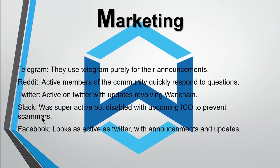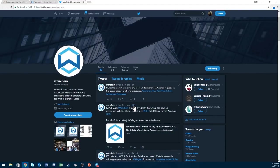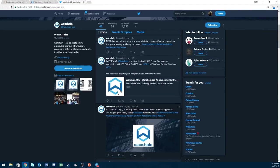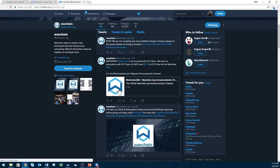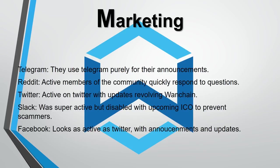Now with their marketing: they have a Telegram, used purely for announcements — you can't talk or ask questions there. They have a Reddit with active community members quickly responding to questions — if you look at it, it's super active. Their Twitter is active with updates, as you can see. Their Slack was super active but got disabled with the upcoming ICO just to prevent scammers. Their Facebook looks pretty much as active as Twitter. In my opinion, they're actually pretty active in marketing — pretty much what I expect from any company that's having an ICO.